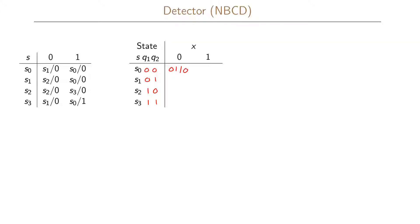With a 1 as an input we go to state S0 with a 0 as an output. In state S1 with a 0 input we go to state 10 with a 0 output, and then with a 1 as an input we go to state S3, which we represent as 11, with a 0 as the output. Finally, if we are in state S3 represented as 11, with a 0 as an input we go to state S3 again, represented as 11, with a 0 as the output.